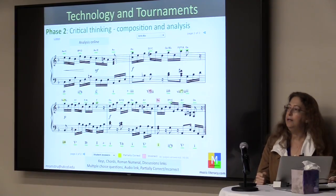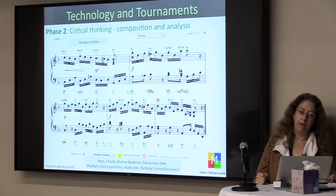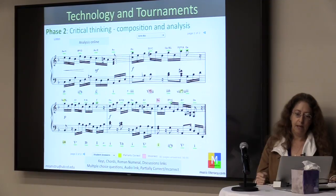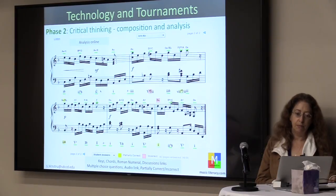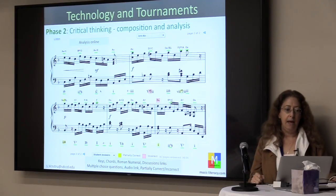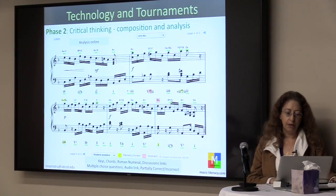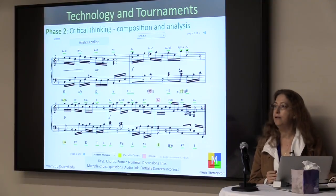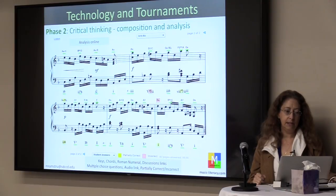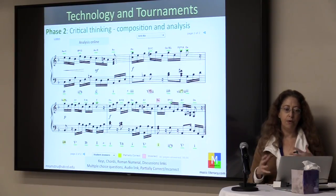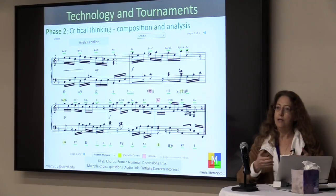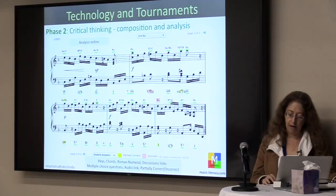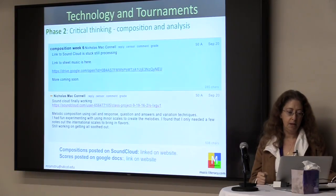Phase two is critical thinking, composition, and analysis. Here's an example of a Handel excerpt where students are required to put chords and Roman numeral function on it, with some discussion questions. As they go through it, they can now see when something is correct and when something is partially correct, and then go back and redo it. This allows them to get to a place where they're abstracting — moving from what are the notes to how does it actually function — which is one of the higher levels of critical thinking for a music theorist.